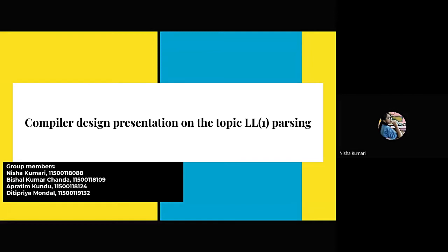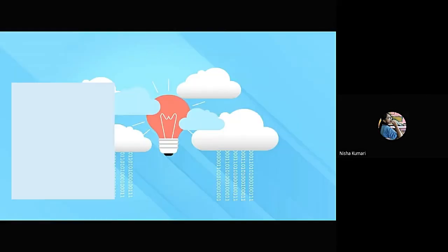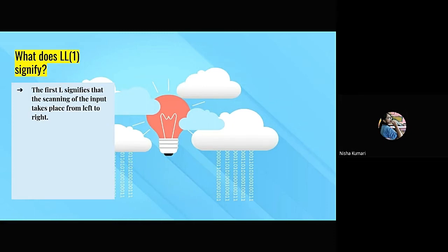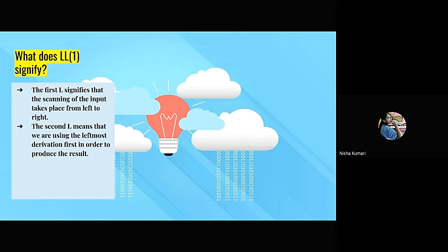So let's begin. Our topic is LL1 Parsing. What does LL1 signify? The first L in LL1 signifies that the scanning of the input takes place from left to right. The second L means that we are using the leftmost derivation first in order to produce the result. And the number one indicates that only one lookahead is involved in order to generate the result.